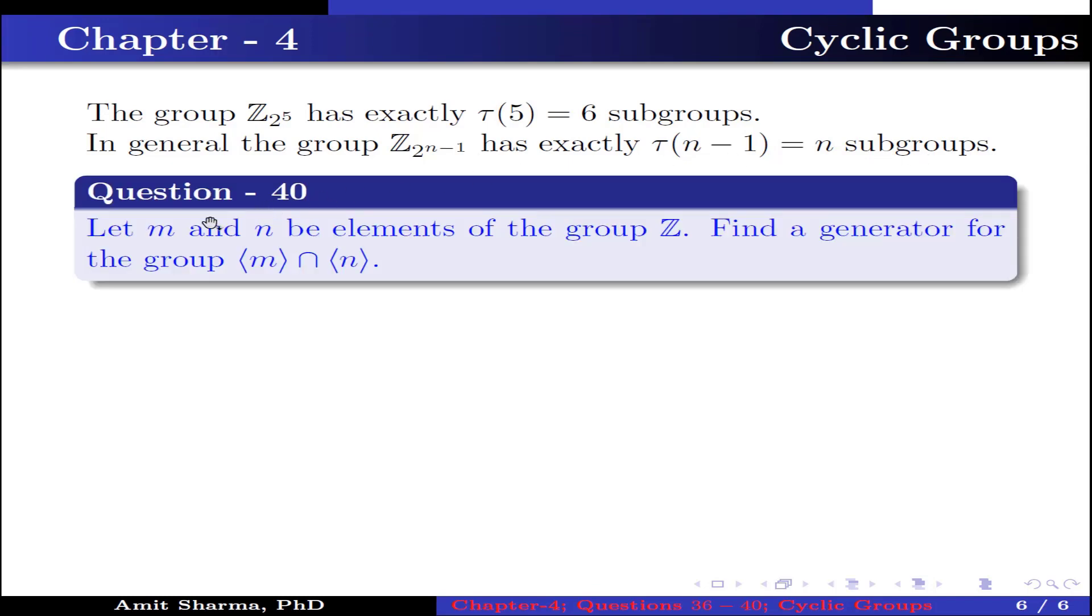Question number 40: Let m and n be elements of the group Z. Find a generator for the group generated by m intersection group generated by n. The generator of ⟨m⟩ ∩ ⟨n⟩ is equal to lcm(m,n).